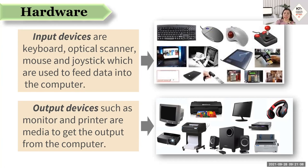About output devices, here are examples: the monitor, the printer, the headset, the projector, speakers. They generate the optical result. When you enter data, you can see the result — you can see the data you've entered through your screen. And if you print the data you have entered to the computer, the printout is already the optical output generated by the output device, which is the printer.